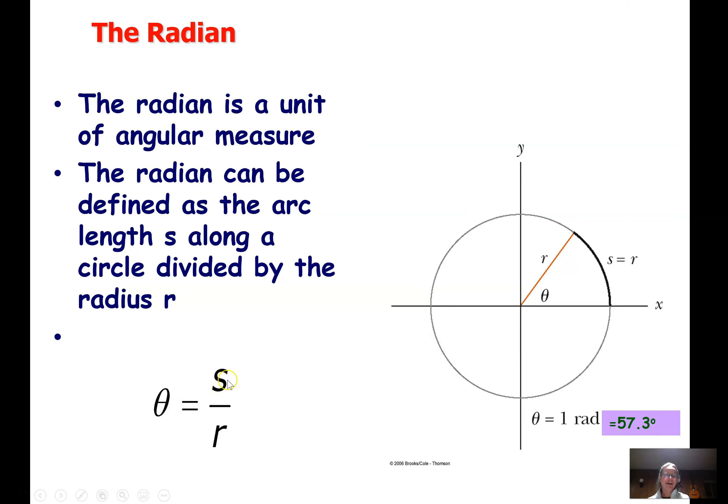So if this s happens to be the exact same length, the distance is the same length as this r, that's a one for one, which equals one radian. That's what a radian is. It's basically you take the radius off and you bend it around there. That equals one radian, which does happen to be 57.3 degrees.